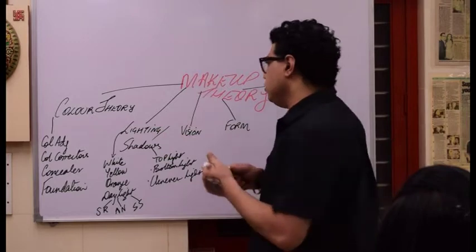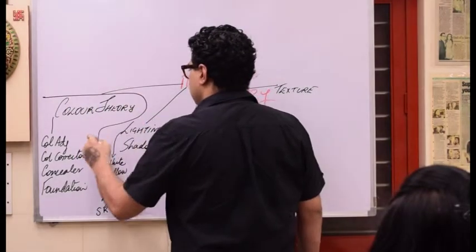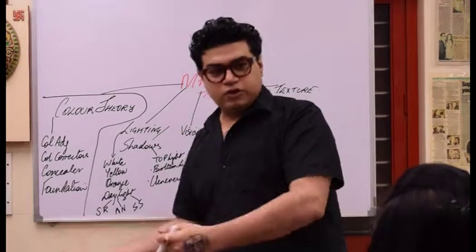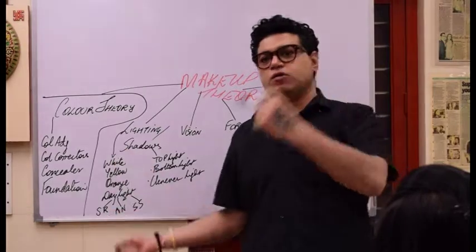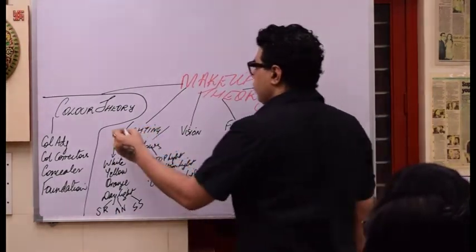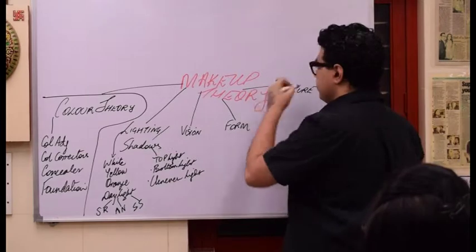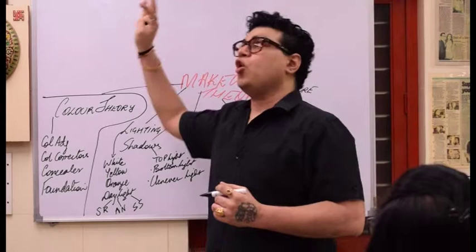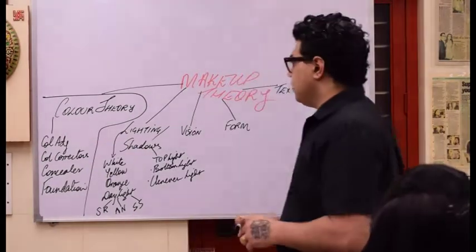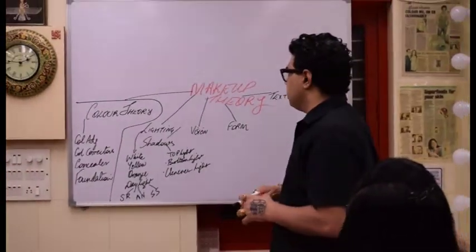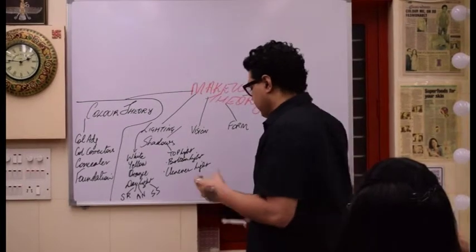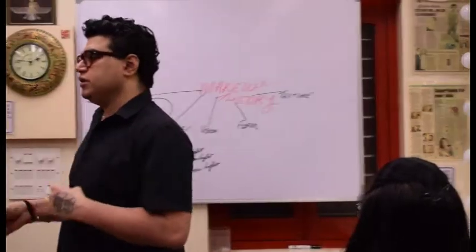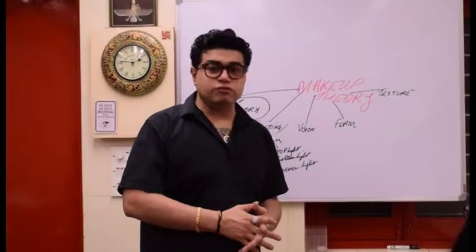This is a huge chapter — the one that finally takes you to learning foundations, concealers, correction of dark marks, all of these things. Today we will finish up points one through four. To start with makeup theory, we need to understand how do you visually see different colors, or why do you see different colors.